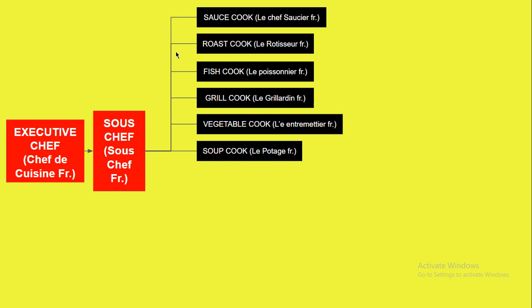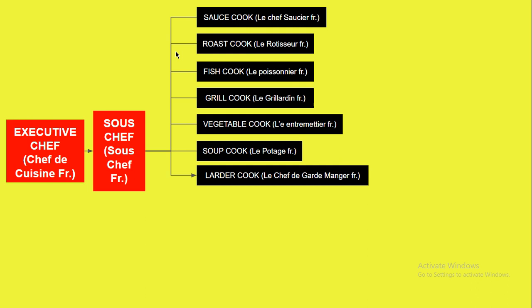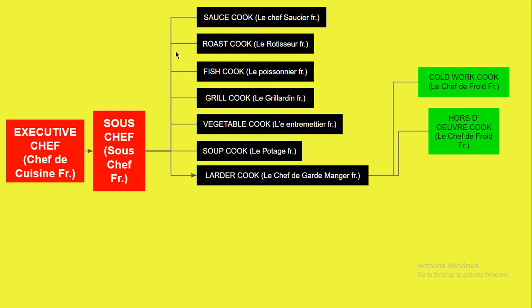After the Soup Cook is the Larder Cook — Le Chef Garde Manger — who takes care of the cold kitchen. All cold items are prepared here. Under him are three chefs: the Cold Work Cook — Le Chef du Froid — who takes care of all cold work, whether decorative cold items or cold dishes; the Hors d'Oeuvre Cook — also referred to as Le Chef du Froid — who is in charge of preparing all appetizers; and the Butcher, who takes care of all meat items.